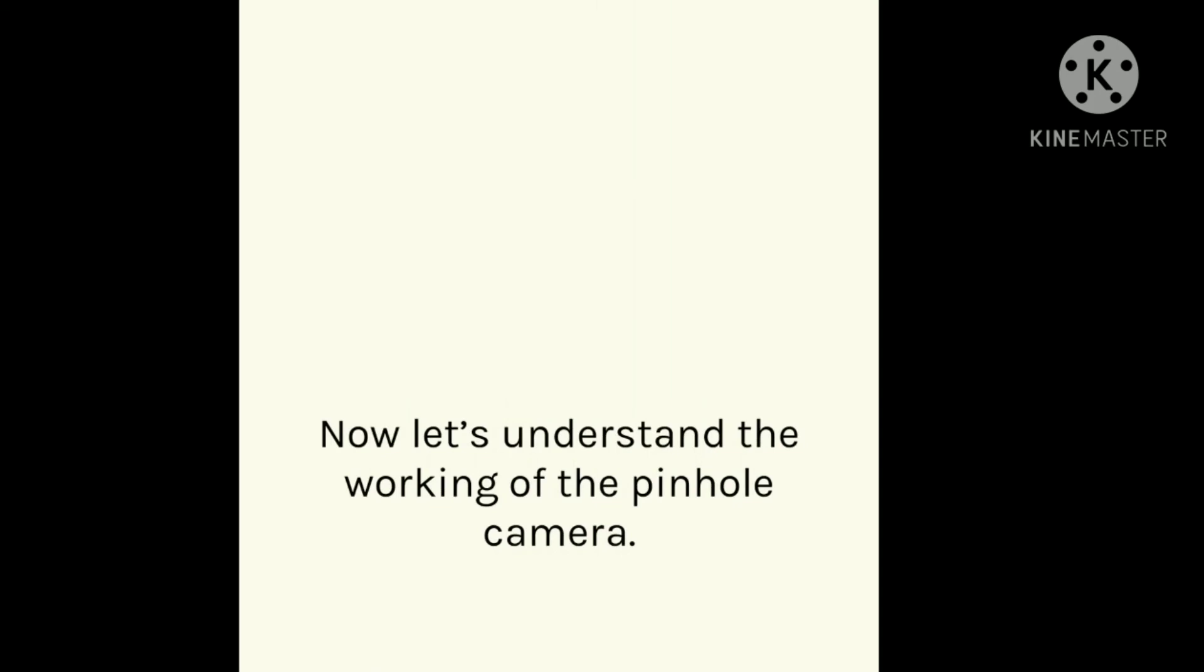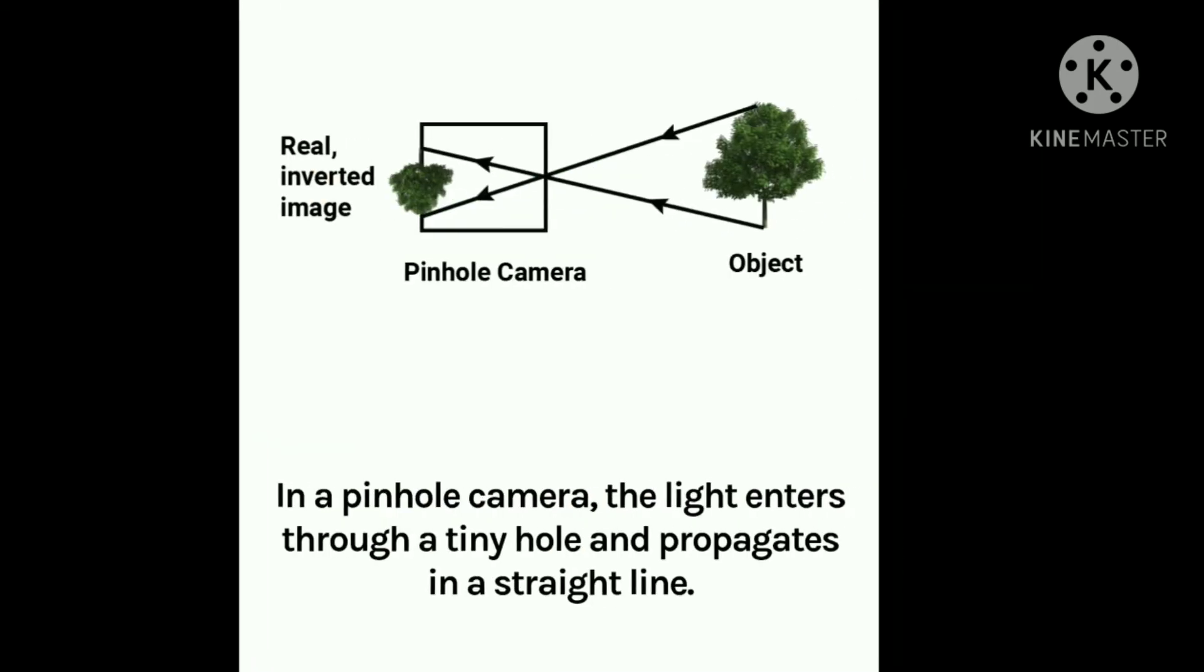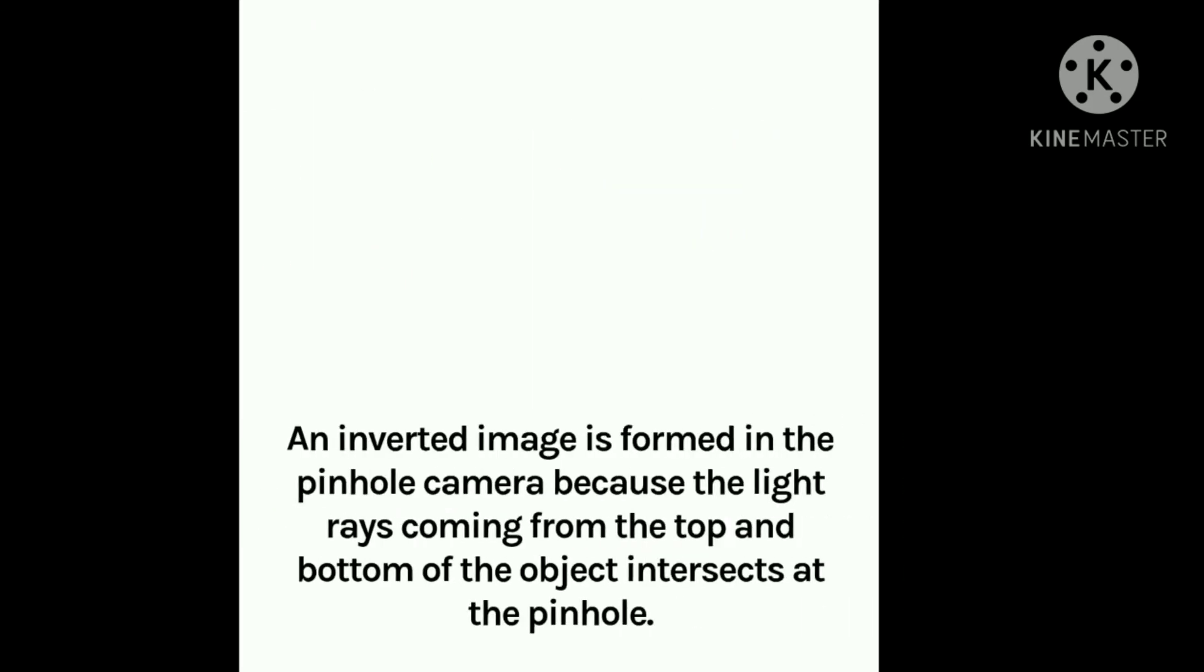Now, let us understand the working of a pinhole camera. In a pinhole camera, the light enters through a tiny hole and propagates in a straight line. An inverted image is formed in the pinhole camera because the light rays coming from the top and bottom of the object intersect at the pinhole.